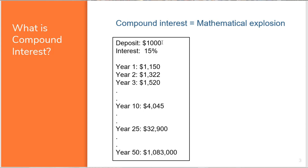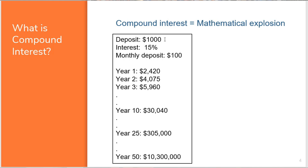Now let's see what happens if we not only deposit $1,000 but also put an extra $100 in every single month. We have a deposit of $1,000, still making 15% per year — which is quite high — and a monthly deposit of $100. After year three we have nearly $6,000; after 10 years, $30,000; after 25 years, $305,000; and after 50 years, all of this compounding gives us $10,300,000 — for putting in $1,000 now and $100 per month.